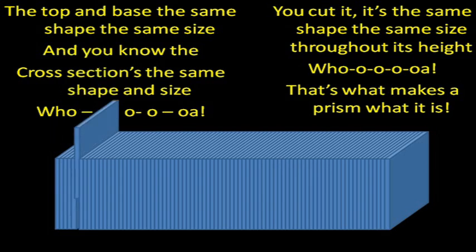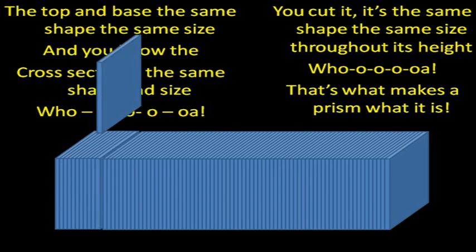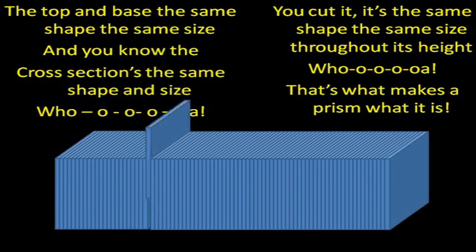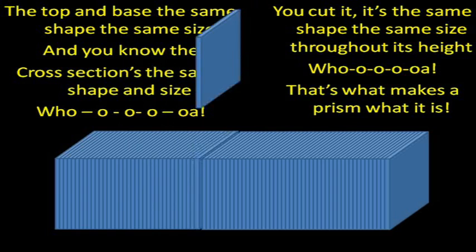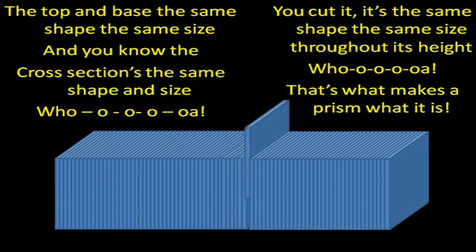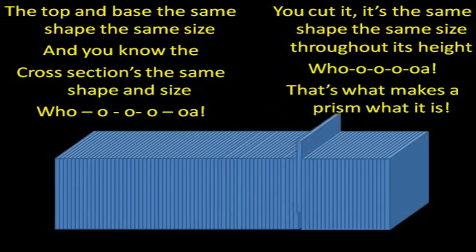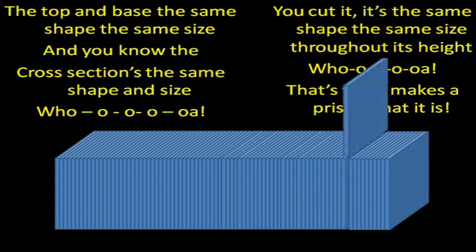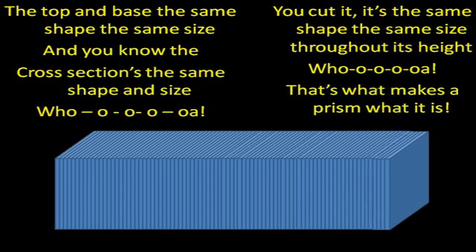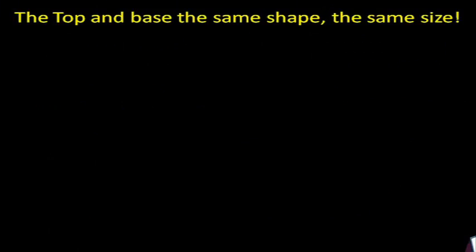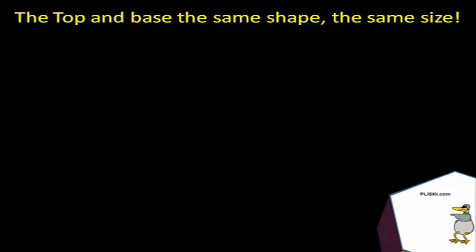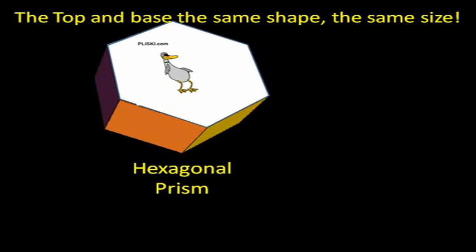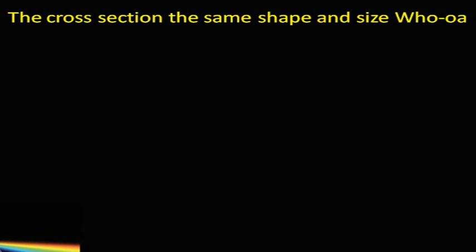The top one is the same shape, the same cross-section. It's the same shape, the same size. You cut it, it's the same shape, the same size. That's what makes a prism — the top one is the same shape, the same size. You know your cross-section's the same.